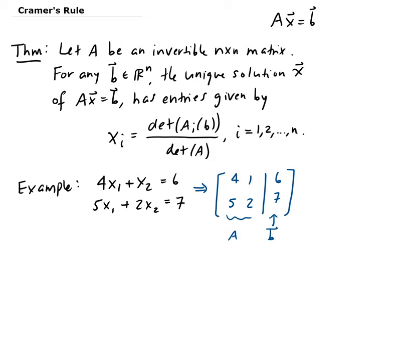According to the formula, we're going to first find the determinant of A. The determinant of A is 8 minus 5, which gives us 3.